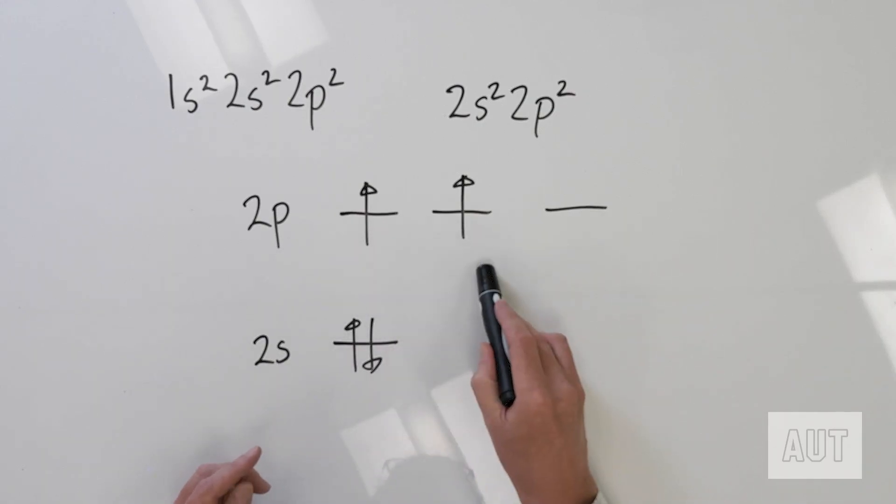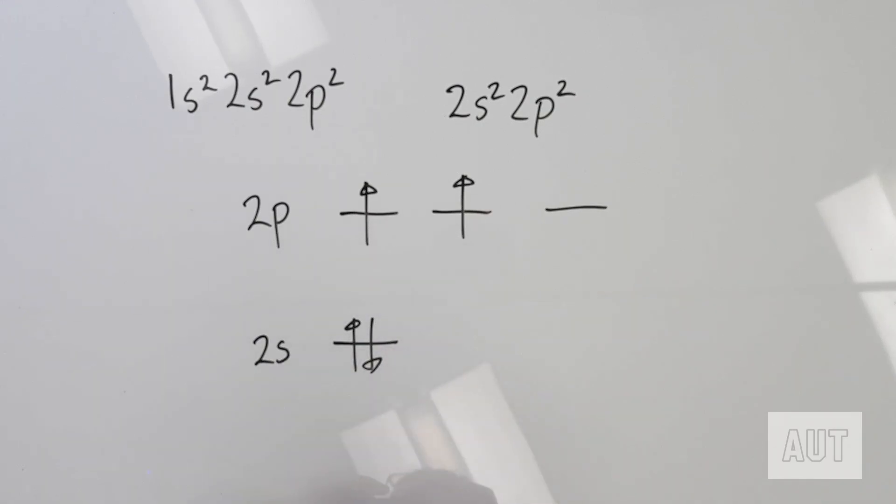That might make it difficult to form any more than two bonds. If you've only got two unpaired electrons, you can imagine these being involved in bonding, but the paired electrons are not going to be involved in bonding. This is at odds with normal carbon-containing molecules. You know that carbon generally forms four bonds — so how is it going to do that if it only has two unpaired electrons? That's question number one.